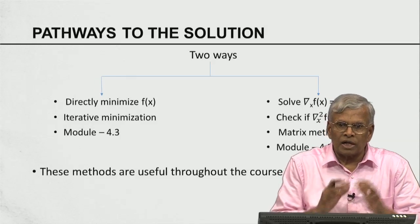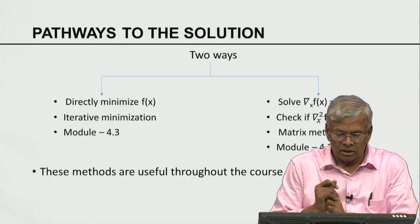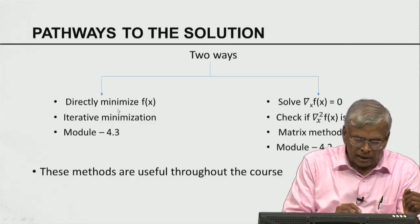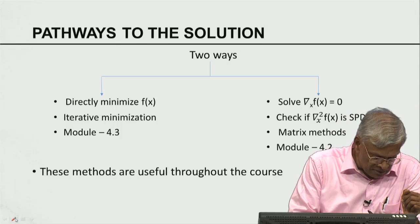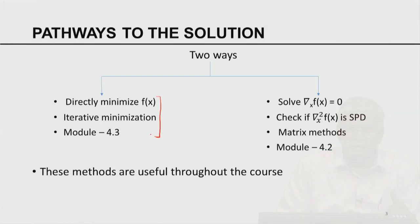The pathways to the solution require converting the mathematical formulation to actual numerical computation. There are two ways to approach this. One is to directly minimize F(x), leading to iterative minimization algorithms, which we will cover in module 4.3. An alternate way is to compute the gradient and Hessian of F(x), set the gradient equal to zero, and verify the system is symmetric and positive definite — leading to solving linear systems of equations, covered in module 4.2.